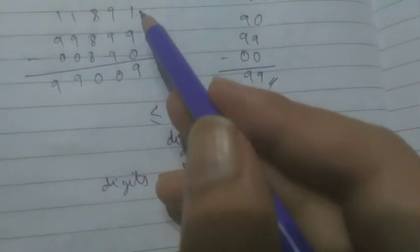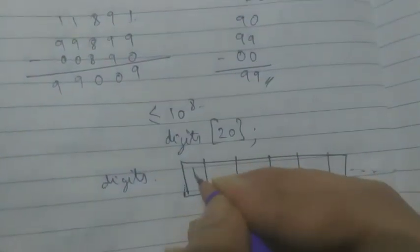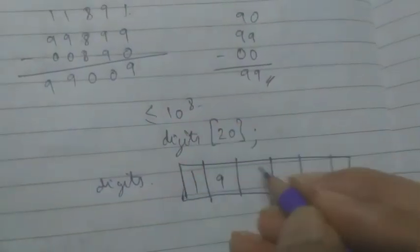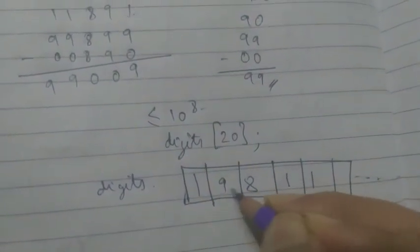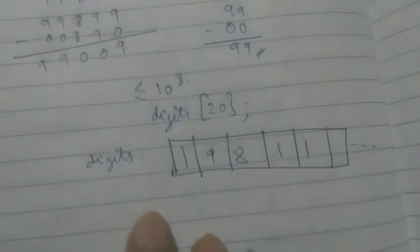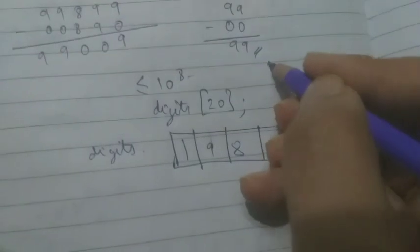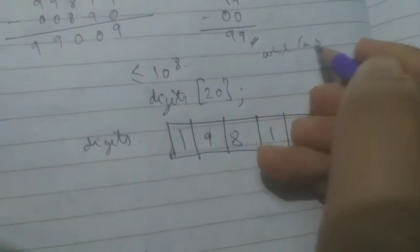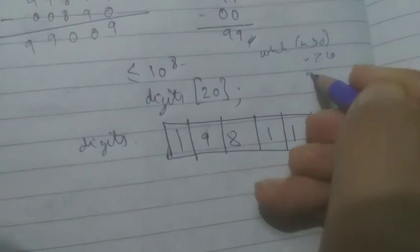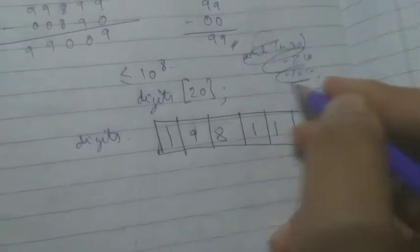So we are going to insert all the elements from the end, that is 1, 9, 8, 1, 1, which was the initial number. So we are going to do it like this, because you know that to extract the digits, the logic that while n is greater than 0, n mod 10, n divided by 10, that thing. So this is the basic thing.